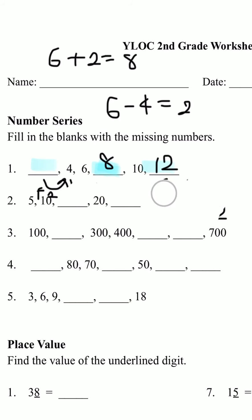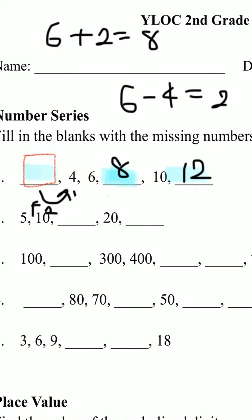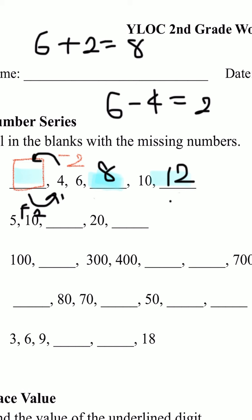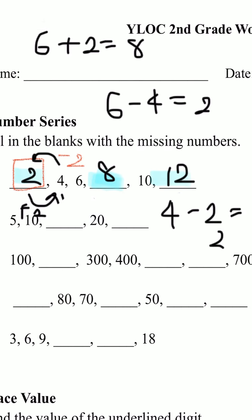Now we just have to find the first missing number. It should be smaller than 4, because we're getting bigger each time. To find that, we're going to have to subtract 2 from 4 to get the missing number. 4 minus 2 is 2. So the answer would be 2.